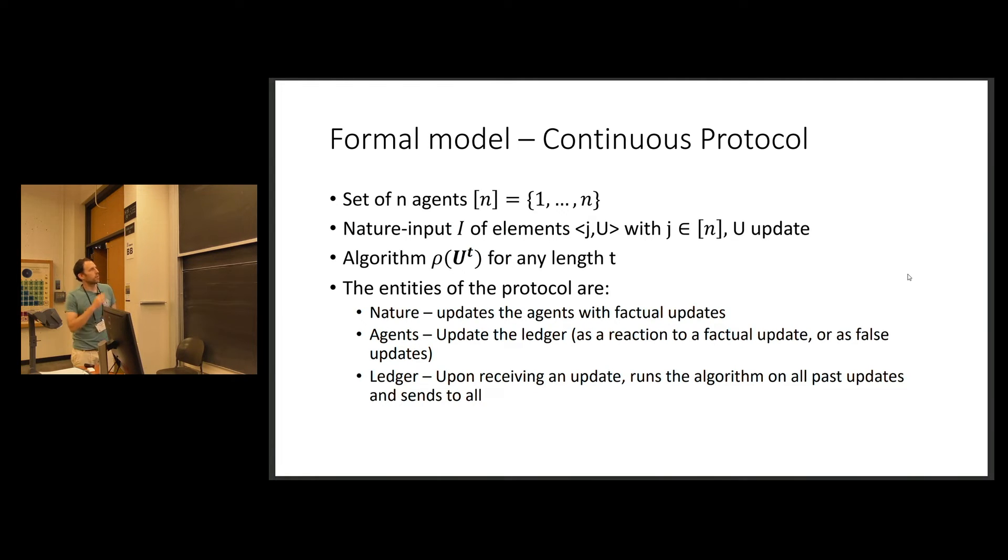So, let's just say quickly that the way we formalize it is as some distributed model where we have nature. Nature represents reality, like the real data points that agents get. And the agents are the strategic agents that want to update. And they don't have to even have anything corresponding with what nature updates them. They can go on their own, update something with the center authority. But if they are truthful, it means the truthful behavior here is every time you get an update from nature, you send the same update to the central authority.